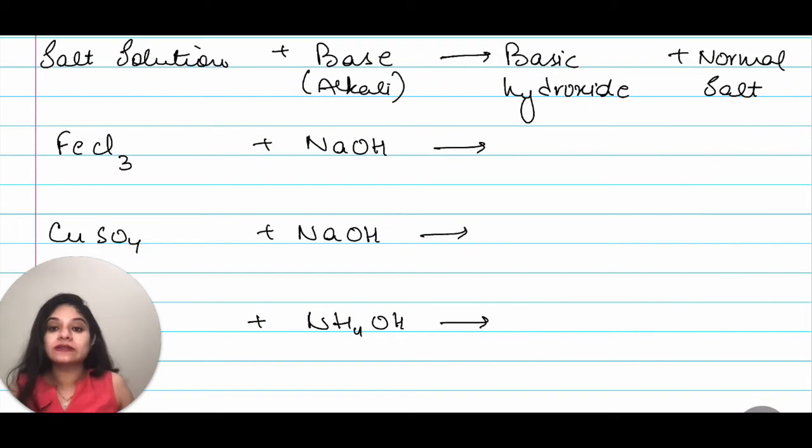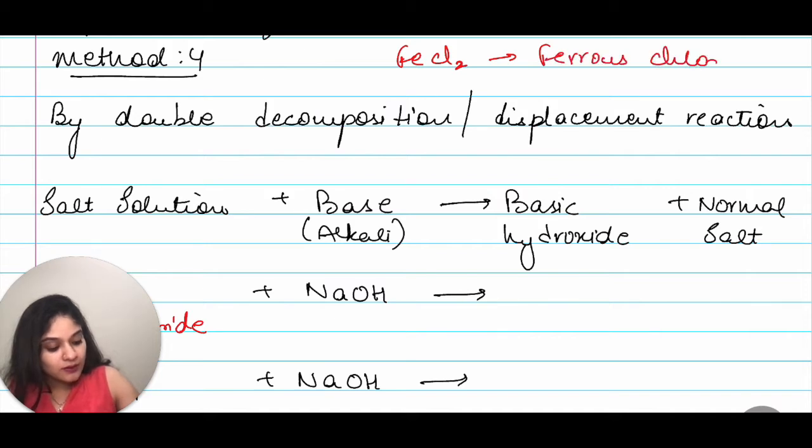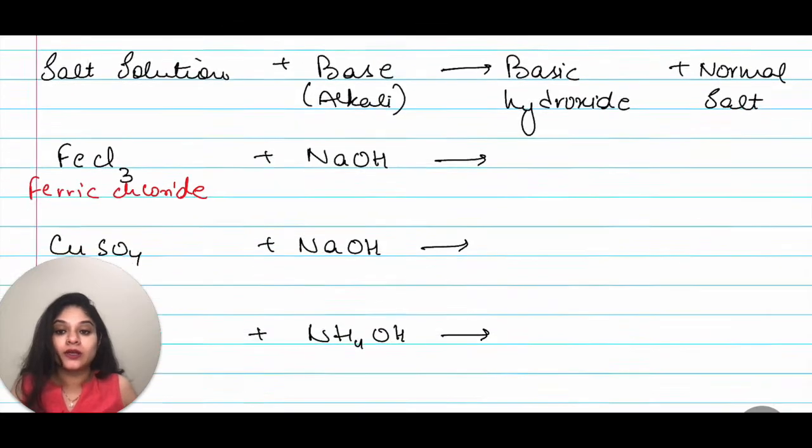The first equation is FeCl3, that is ferric chloride. Let me just write that here. This is ferric chloride. What is ferrous chloride? FeCl2 is ferrous chloride.